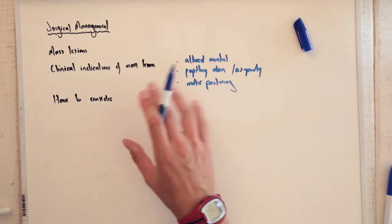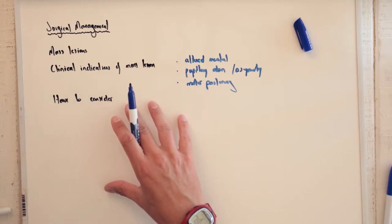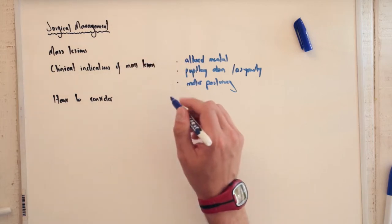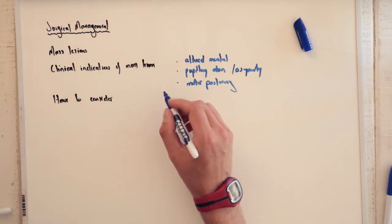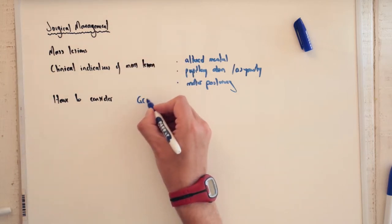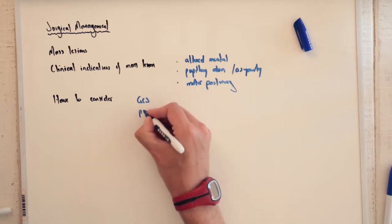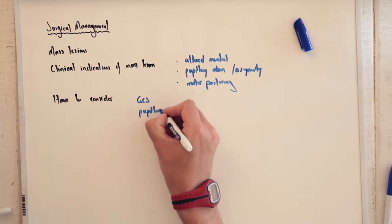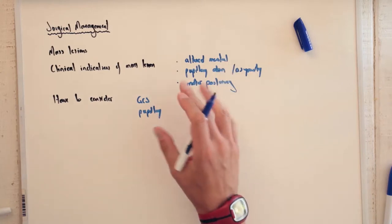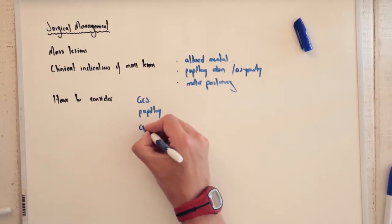So what do we actually have to consider? There are a lot of things that need to be considered before deciding on surgical management. We really have to consider the Glasgow Coma Scale score, the mentioned pupillary reflexes, pupillary state and reflexes, and any comorbidities.